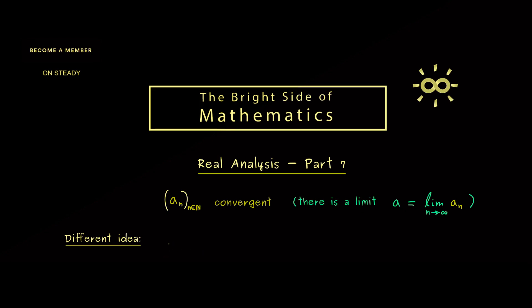For this let's look at the number line again and at a sequence which should converge. So here we have a_1, a_2, a_3 and so on. And the sequence members accumulate here so there should be a limit here.